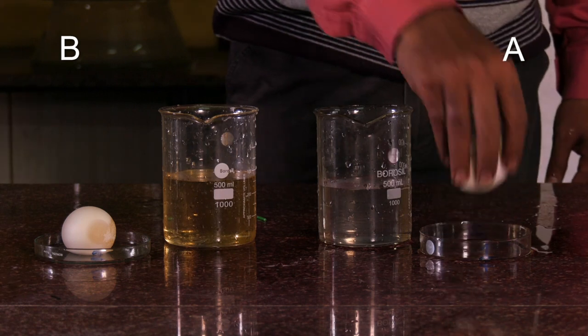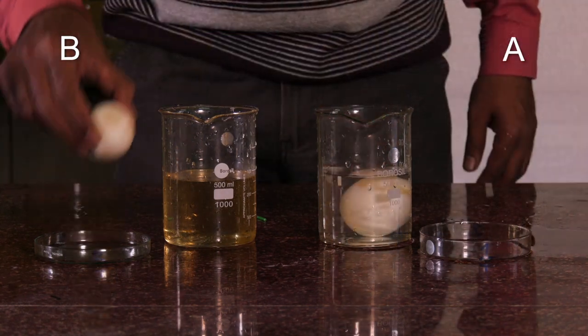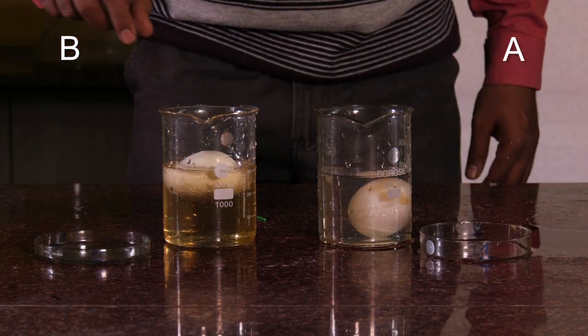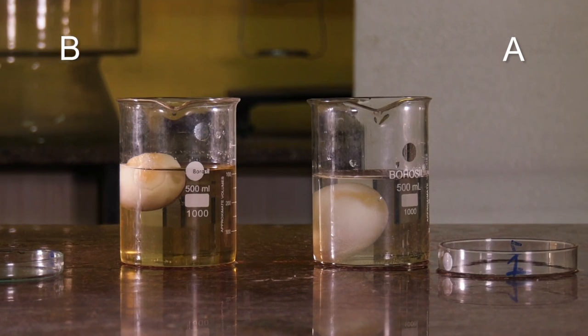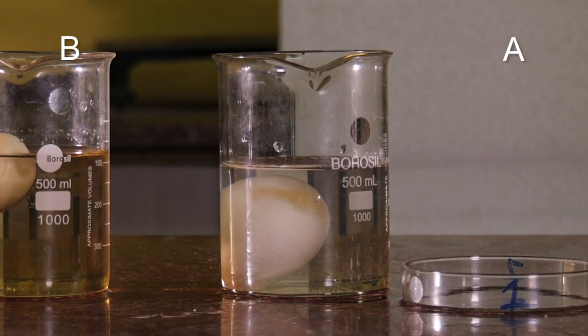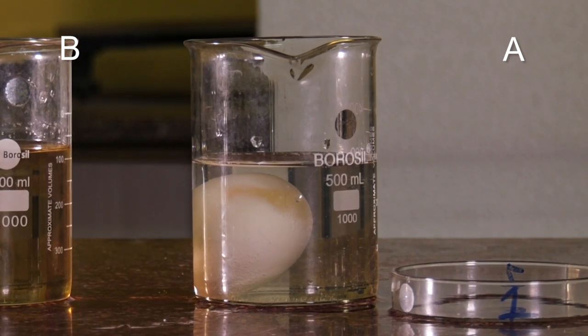We shall now dip one egg in plain water and the other in concentrated sugar solution. We now have to wait for one hour and then see if there is a change in the eggs. We can see that this egg has absorbed water and grown in size. Let us take its weight.